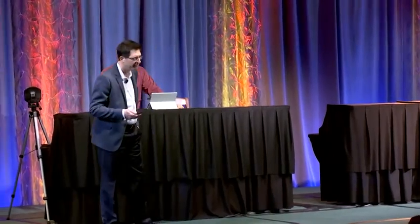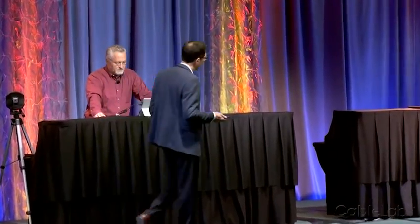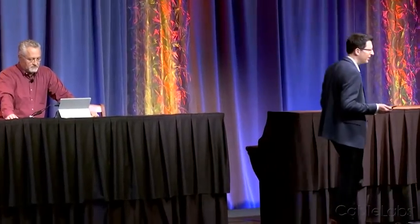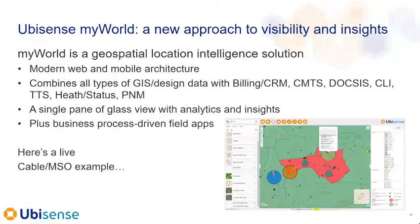Ubisense MyWorld is a breakthrough innovation. We combine all kinds of operational data sources, including any GIS data that you have, as well as CRM and billing information, trouble ticketing, work orders. We get a combination of DocSIS and other operational information. We bring it together into a single pane of glass operational solution, which gives you unprecedented visibility into what's really happening in the network. We also provide process-driven and business-targeted applications that allow you to gain greater insights into the network.